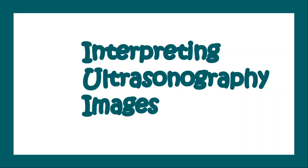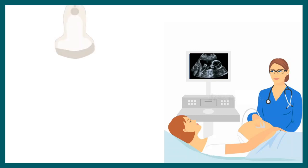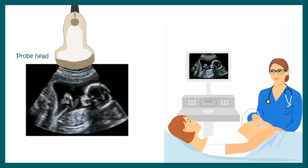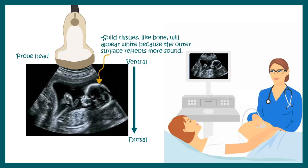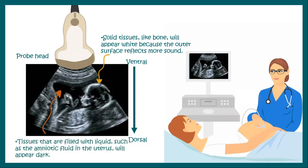Now let us understand how we interpret USG images. When we put a probe on the body surface, the part of the image near to the probe appears narrower and the part away from the probe appears wider. Solid tissue such as bone will appear white or hyperechoic, because the outer surface reflects more sound waves. Whereas tissue that is filled with liquid, such as amniotic fluid in the uterus, will appear dark or hypoechoic.